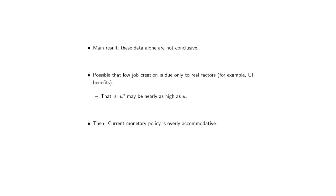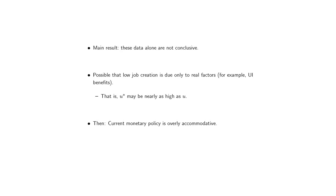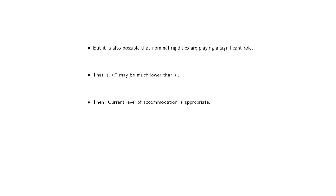The main result is that unemployment and vacancies data alone are not conclusive. It's possible that low job creation is due only to real factors — one example is unemployment insurance benefits. In that case, the natural rate of unemployment may be nearly as high as the unemployment rate itself, and current monetary policy would be overly accommodative. But it's also possible that nominal rigidities are playing a significant role, the natural rate is much lower than the unemployment rate, and the current level of accommodation is appropriate.